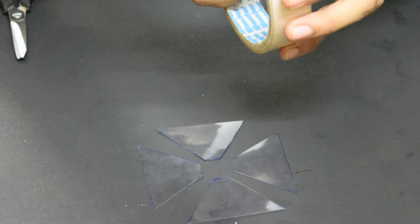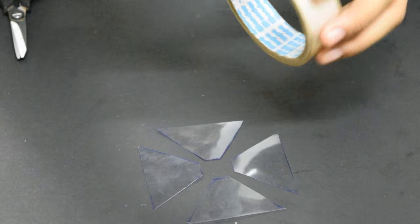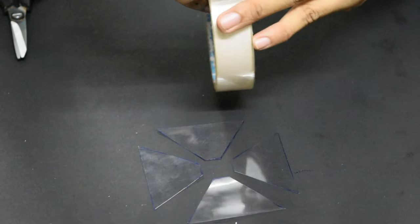Carefully stick all the four pieces together to form a pyramidal frustum using cellotape.